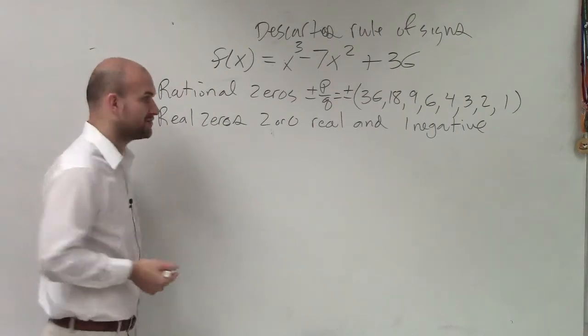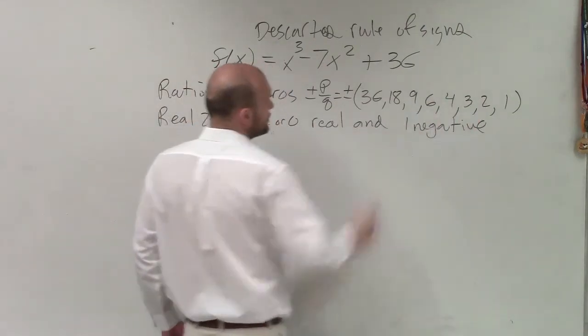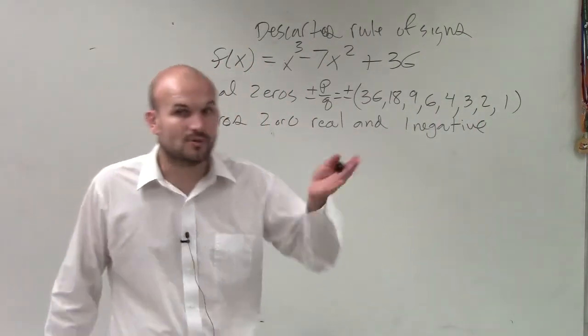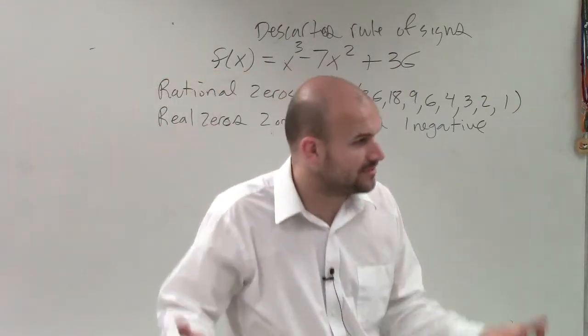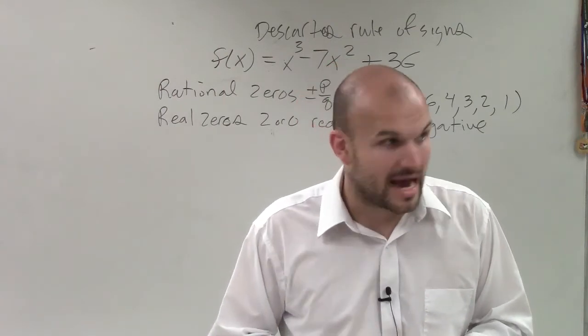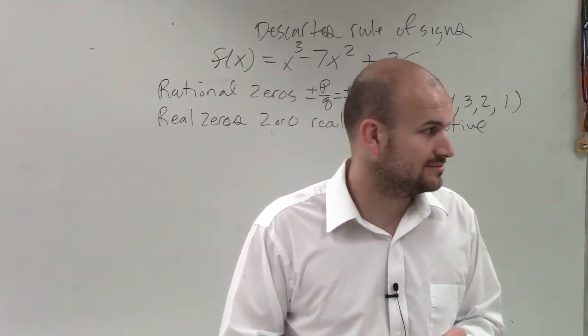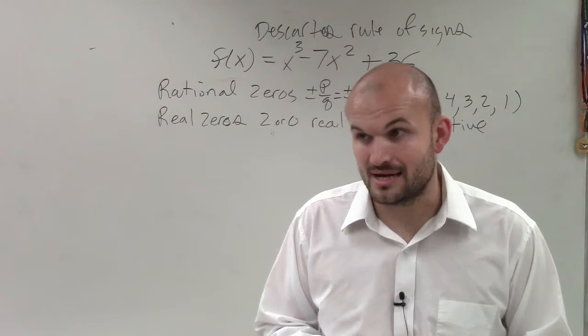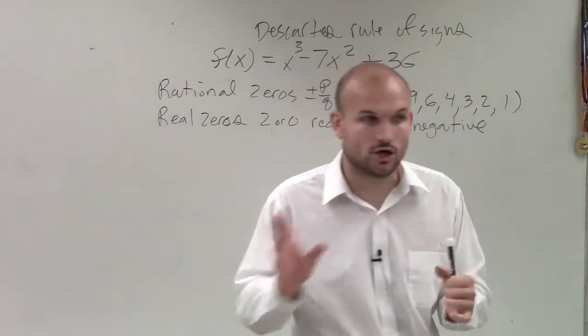If you guys remember the remainder theorem, the easiest thing to do is remember these are all plus or minus. So I need to determine all the zeros. If I don't have a graph in front of me, I don't know what the possible zeros could be. So guess what? I'm going to have to guess and check.